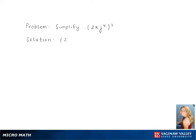To simplify 2kj to the fourth, all raised to the third power, you distribute the three to each coefficient and variable, giving you 2 to the third, k to the 1 times 3, and j to the 4 times 3, giving a final answer of 8k to the third j to the 12th.